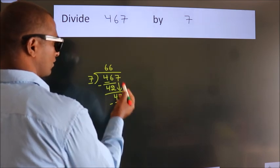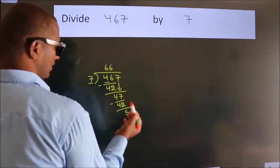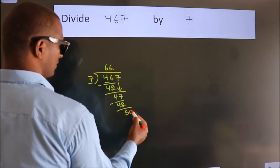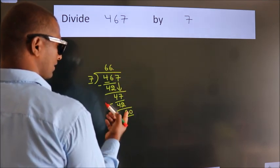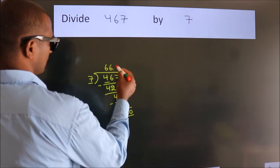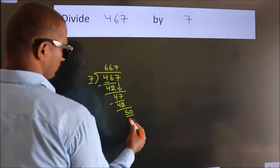After this, no more numbers to bring down. So what we do is put a dot and take 0. So, 50. A number close to 50 in the 7 table is 7 sevens 49.